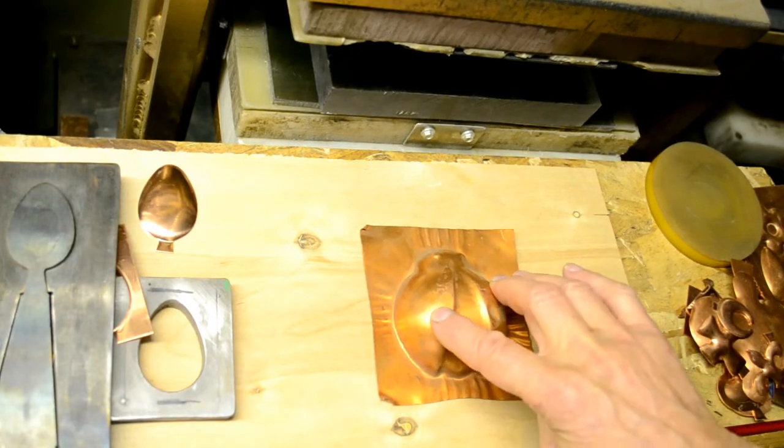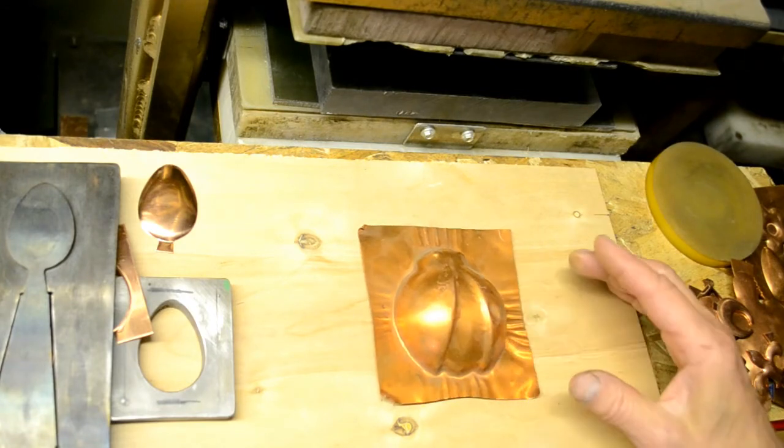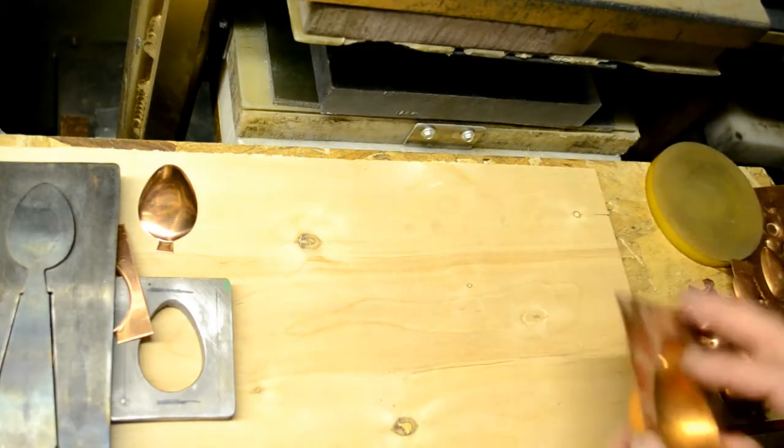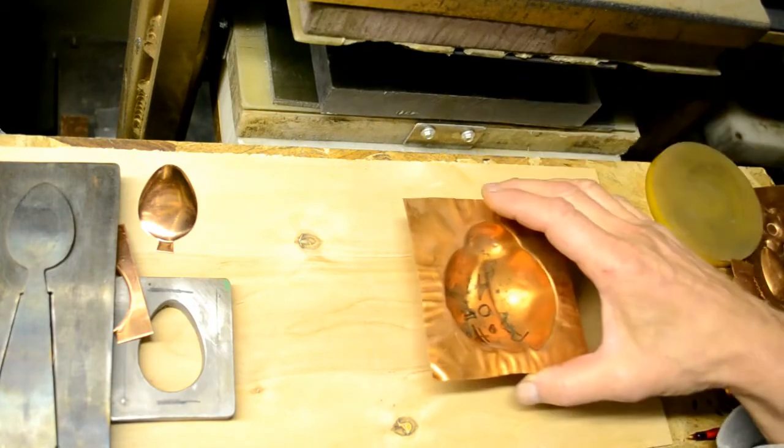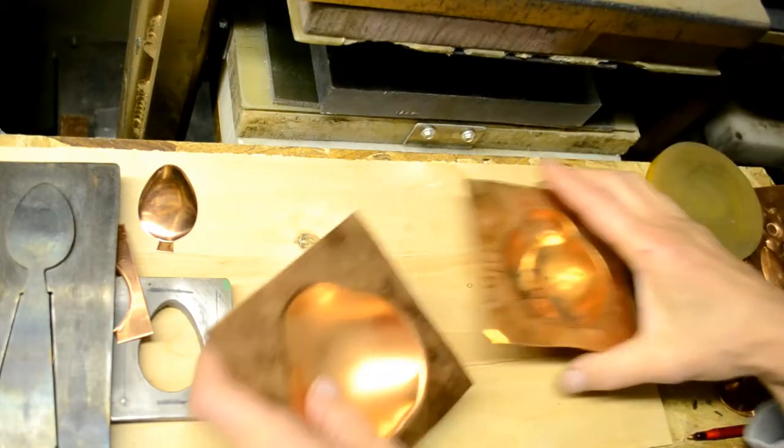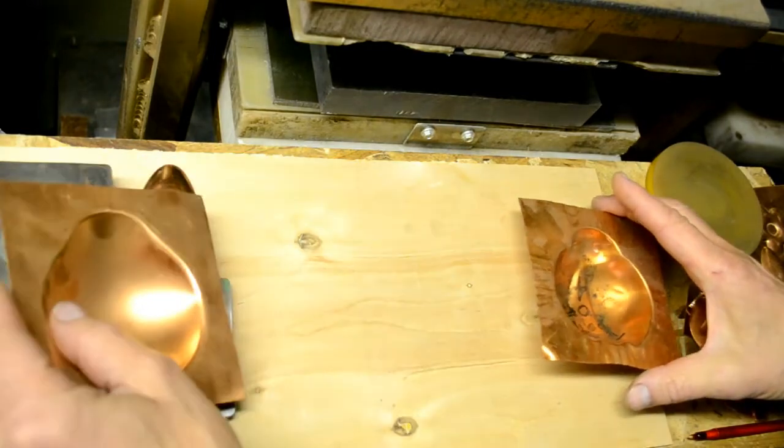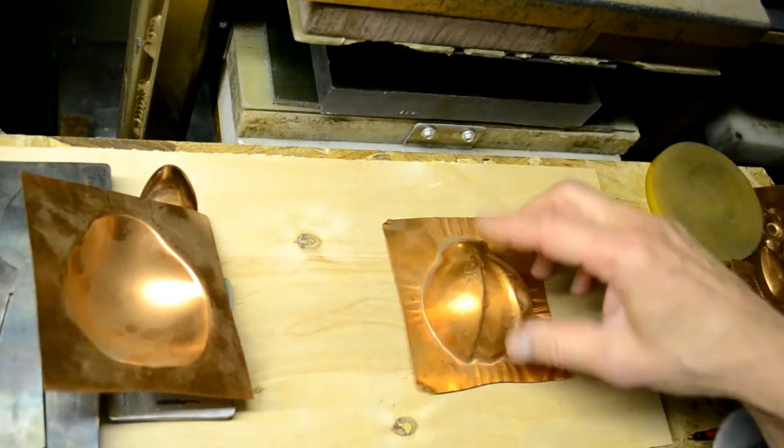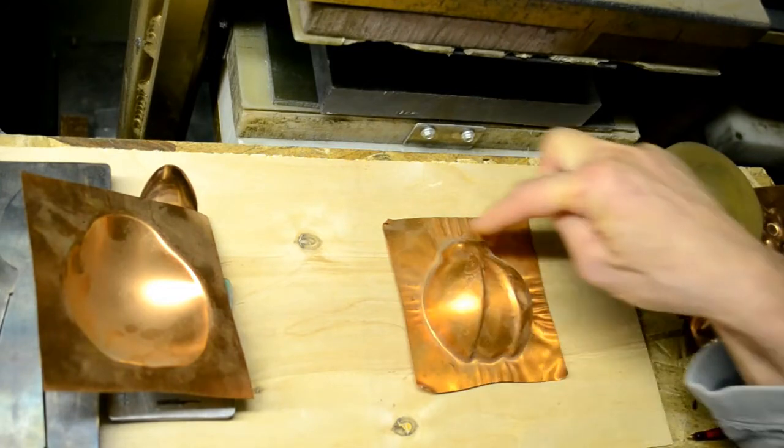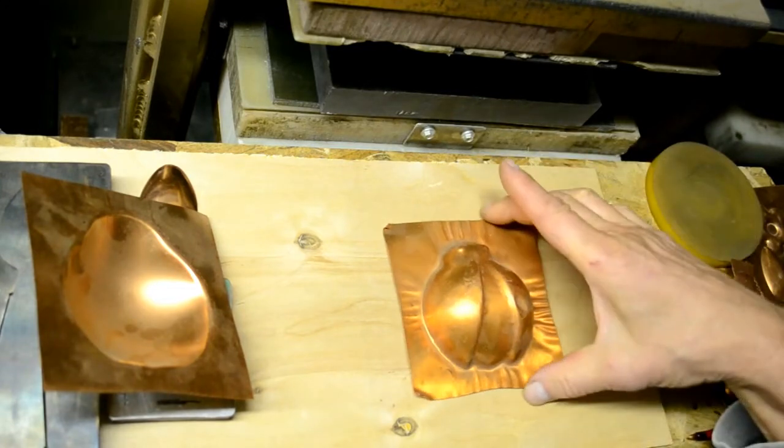And I made a solid male and female conforming die set. First I had this male shape cast in bronze, and then I used that as the model to make a plastic steel female mold, so that the male punch, the bronze piece, would take this and form this out of it with the solid male and female set.